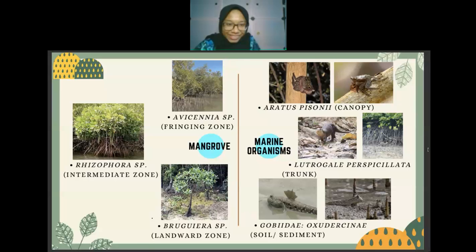The second organism is Lutrogale perspicillata, the smooth-coated otter, found in mangrove habitats in Peninsular Malaysia, feeding on fish, shellfish, and crustaceans. The third is the mudskipper, Gobiidae, which can be found in mangrove habitats within soil or sediment. Mudskipper populations are large due to the abundance of small crustaceans as prey.